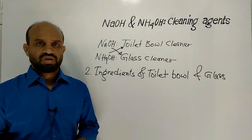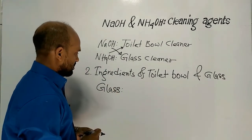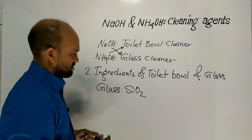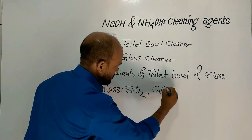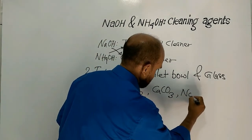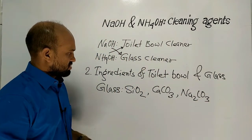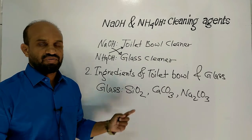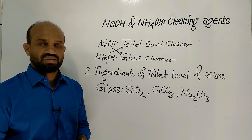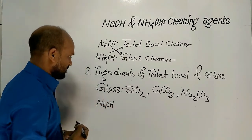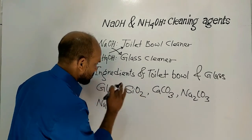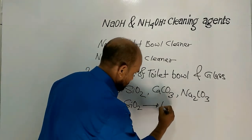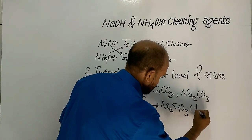The major component of glass is silica — silicon dioxide — along with limestone (calcium carbonate) and sodium carbonate. If sodium hydroxide is used in glass cleaner, it reacts with the glass component silicon dioxide, and as a result sodium silicate and water are formed.